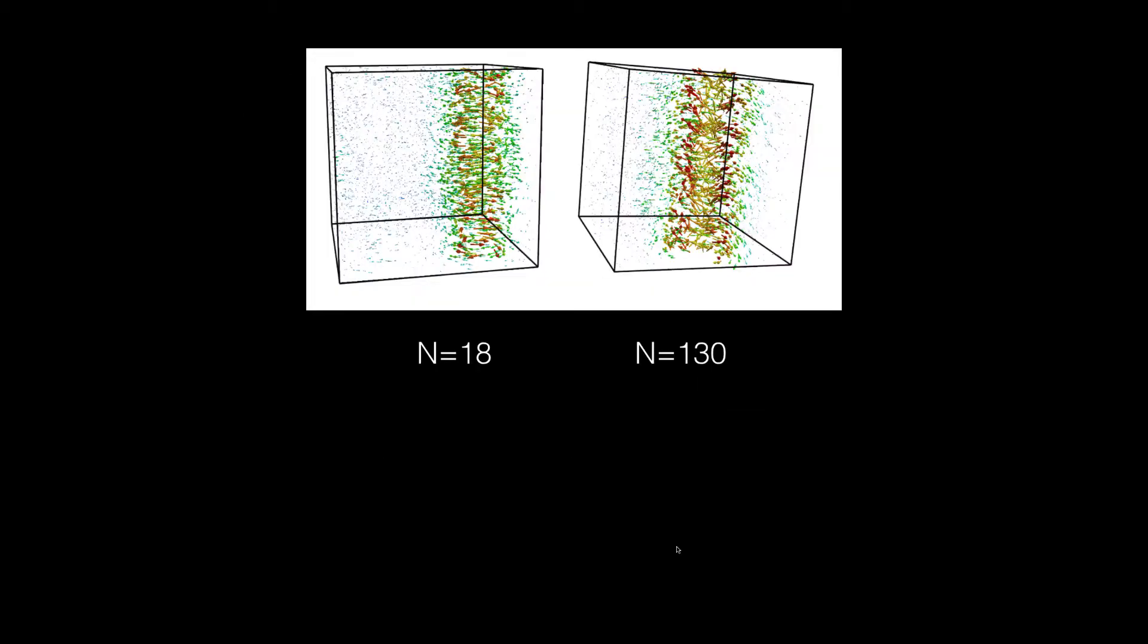For large N, we expect the flow to be two-dimensional, but that is not the case. The flow has strong u_perp component, like here, but it also has u_parallel component along that direction. Thus, flow is quasi-2D, not 2D.